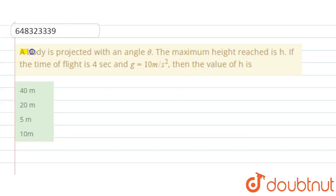Hello students, here the question is: a body is projected with an angle theta. The maximum height reached is h. If the time of flight is 4 seconds and g is 10 meter per second square, then the value of h is what?